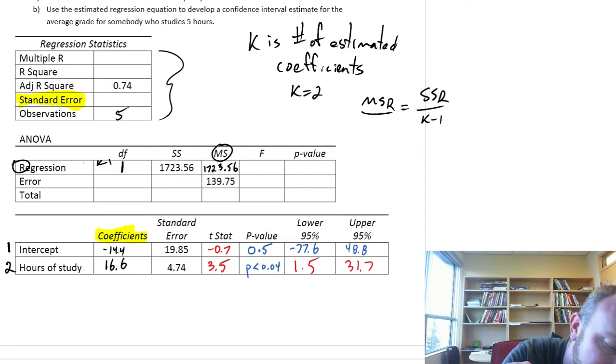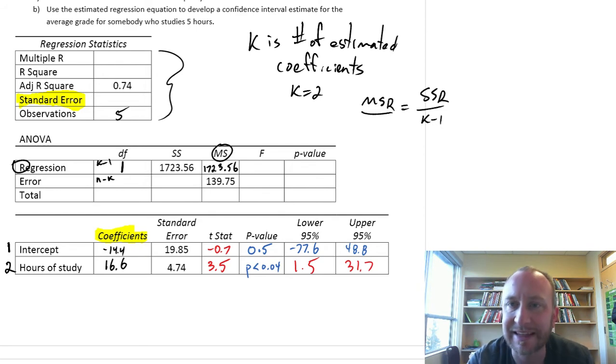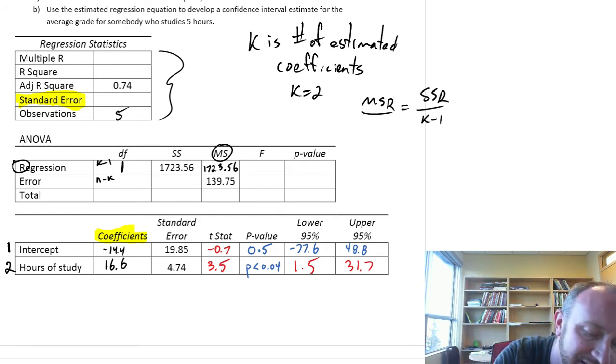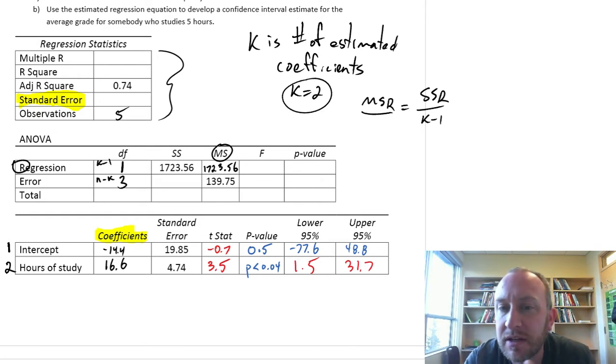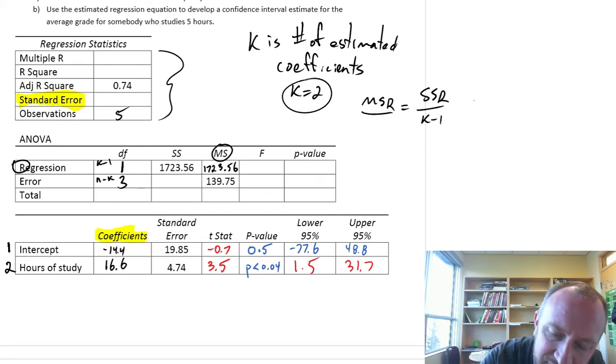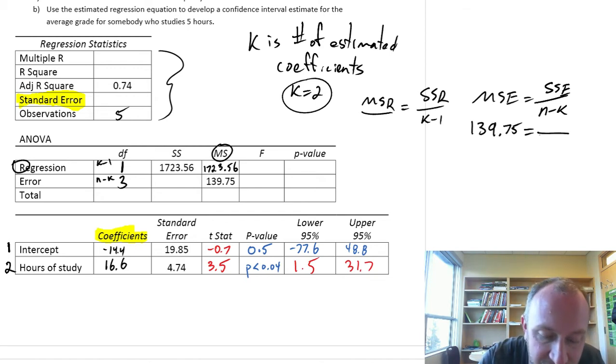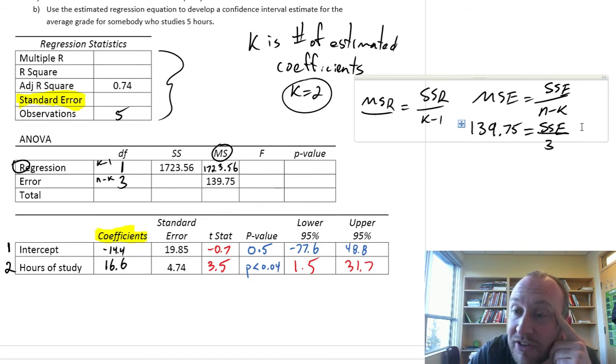Degrees of freedom for error. This also is going to sound familiar. This is n minus k. n, the number of observations. k, the number of coefficients. So this is 5 minus 2. So we have 3 degrees of freedom here. For our sum of squares error now, so here what we have, we're given MSE, which is SSE divided by its degrees of freedom, n minus k. And we have MSE, which is 139.75.